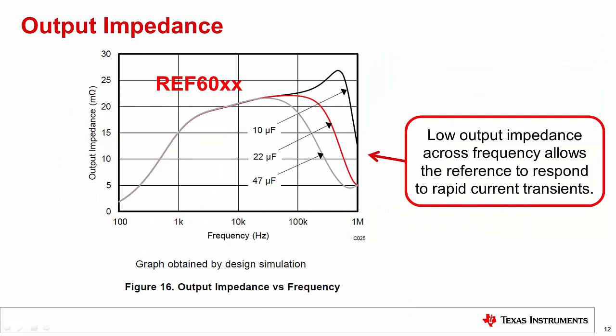One specification that is important to driving the SAR ADC reference input is the output impedance. Unfortunately, many references do not provide information on this specification. The graph shown here is for the REF60XX series reference, and you can see that the output impedance is very low out to 1 MHz. This reference was specifically optimized to drive reference inputs, so this output impedance curve is a good benchmark for comparison.